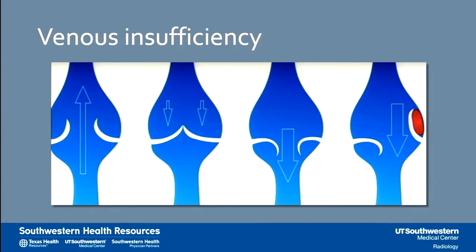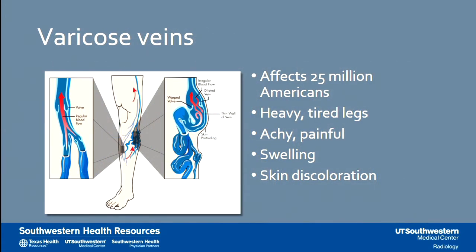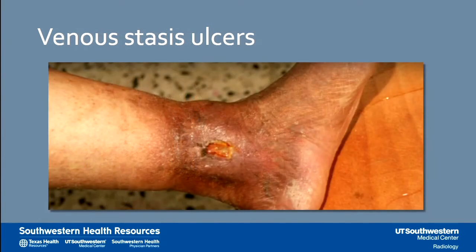The second condition I'm going to talk about is venous insufficiency. In normal veins, blood flows from your extremities back to your heart against gravity, controlled by valves whose leaflets oppose each other to prevent backflow. In many patients, these valves become incompetent, allowing blood to flow backwards into the legs, causing leg swelling and varicose veins. Varicose veins affects 25 million Americans. Your patients are probably complaining of heavy, tired legs that get worse after standing all day, achy and painful legs, swelling, and skin discolorations — eventually leading to venous stasis ulcers.